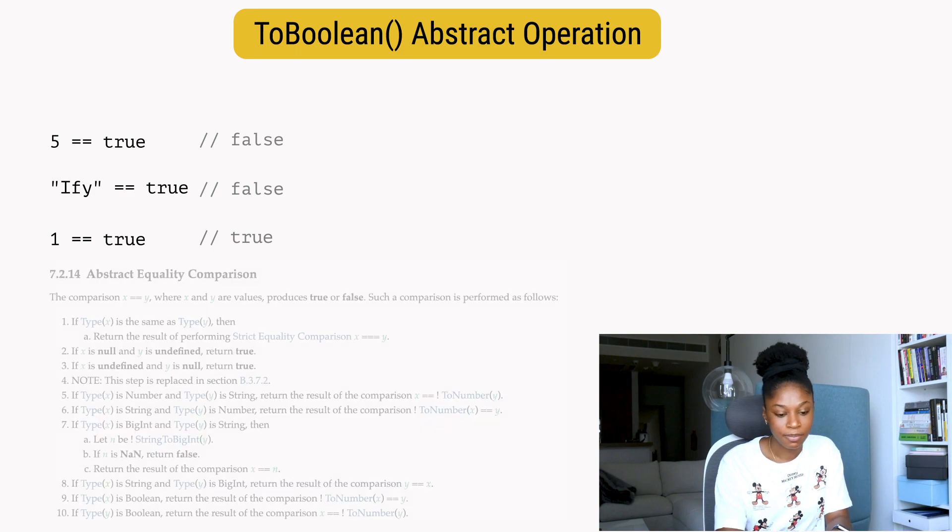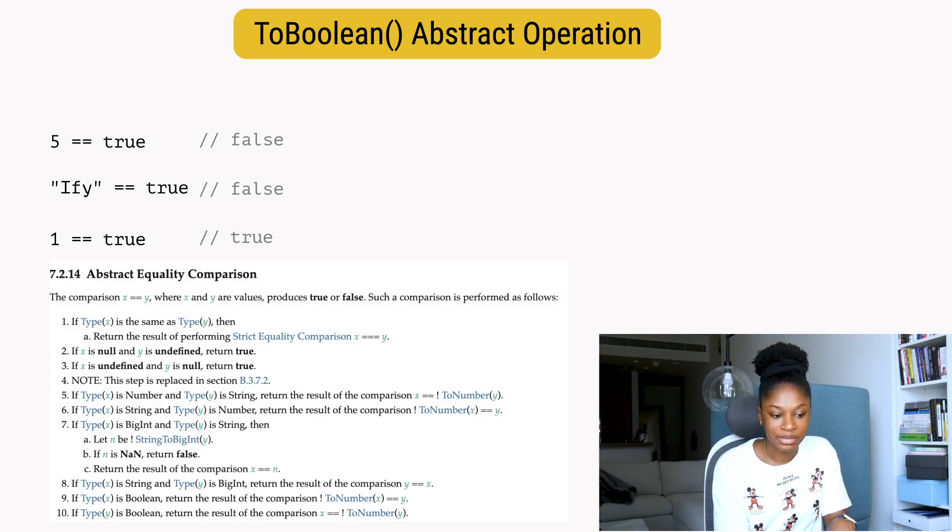Number nine and ten: it says if type X is the boolean, return the result of the comparison ToNumber(X) == Y. It's basically saying convert X to a number and then compare it to Y. So if a boolean is being compared to a string, a number, or whatever, it doesn't really care what the other value is or what type the other value is. It first tries to convert the boolean to a number.